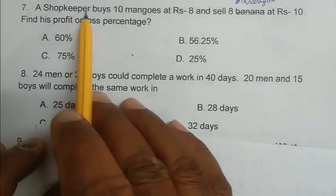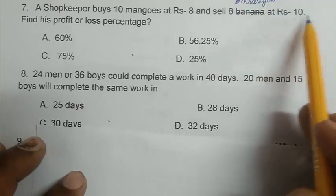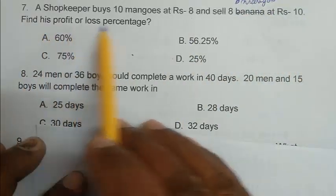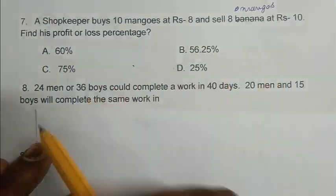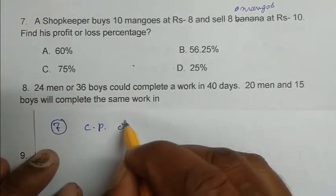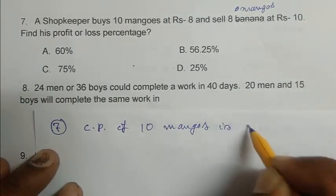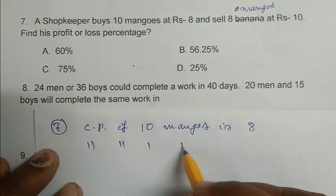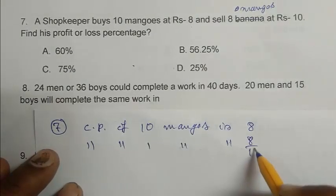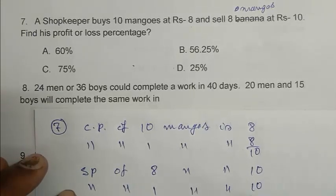Question number 7. A shopkeeper buys 10 mangoes at Rs. 8 and sell 8 mangoes at Rs. 10. Find his profit or loss percentage. So cost price of 10 mangoes is 8. Cost price of 1 mango is 8 by 10. And selling price of 1 mango is 10 by 8.